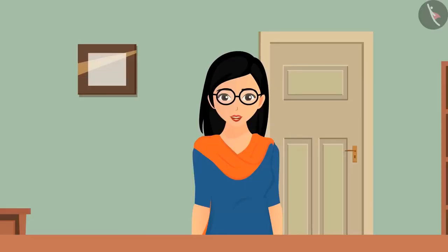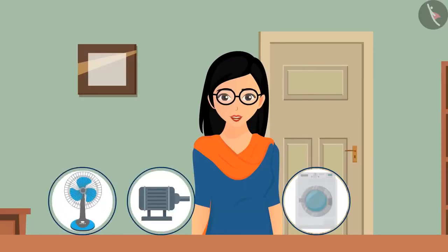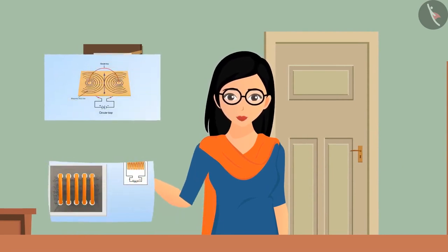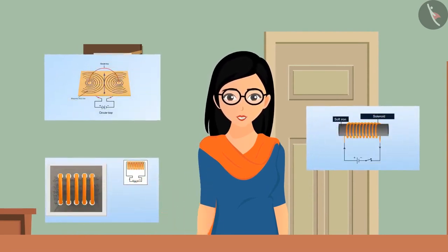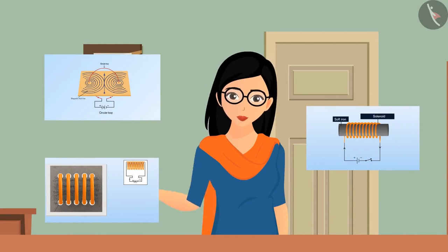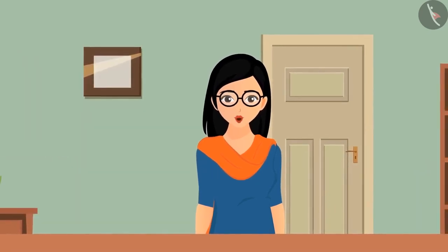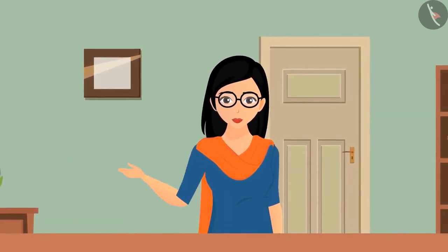These electromagnets are used in various appliances like fans, electric motors, washing machines, and generators. By this video, we have learnt about the current carrying circular loop and solenoid, and how to make an electromagnet with the help of a solenoid. But how to use electromagnets in appliances like motors? We will learn about this in upcoming videos after understanding Fleming's left-hand rule.